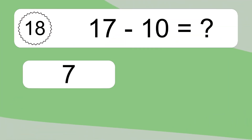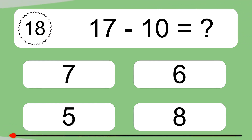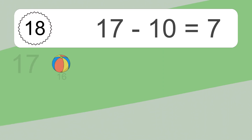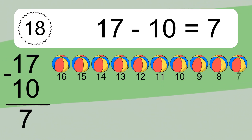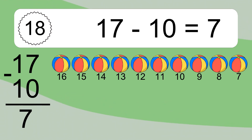17 minus 10 equals what? 17 minus 10 equals 7. Let's count it: 16, 15, 14, 13, 12, 11, 10, 9, 8, 7.